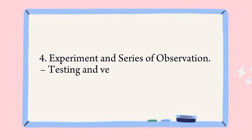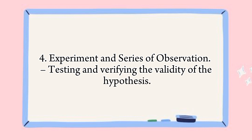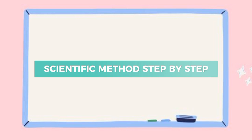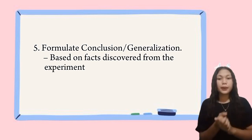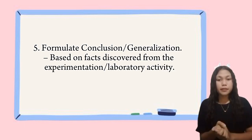Fourth, experiment and observation — scientists test the hypothesis through experiments and observations. For example, they might grow two groups of plants, one with plenty of light and one with less light, to see if there is a difference in how fast they grow. The next step will be discussed by Ms. Beraki. Thank you, Ms. Janyu. The next step of the scientific method is to formulate a conclusion.